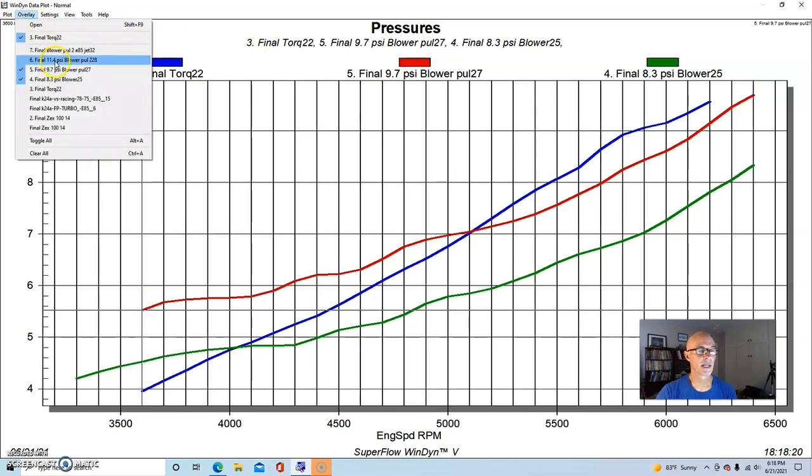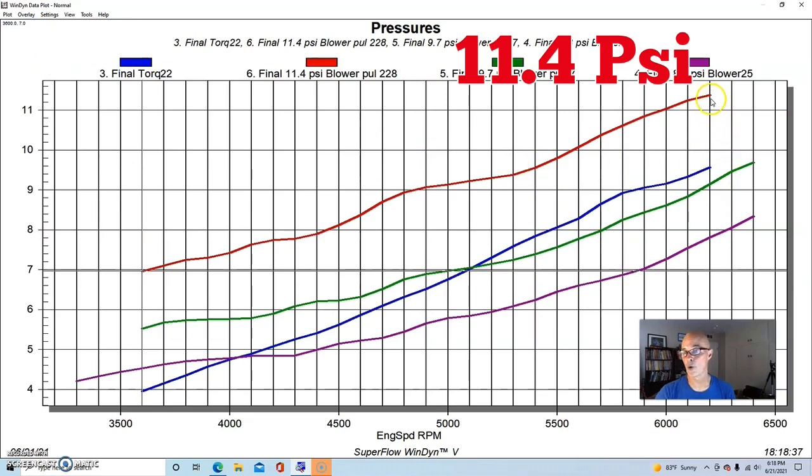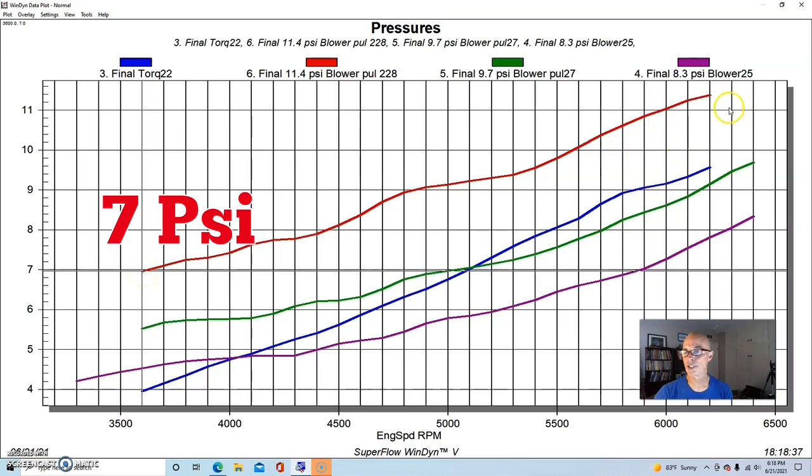It had quite a bit more boost - it had nearly 7 pounds down low at 3600 and 11.4 out at 6200, which is more than the Torque Storm at every point. But again, like I said, the 671 also had a little bit more timing. We only ran 27 or 28 degrees of peak timing with the Torque Storm, whereas we ran 30 degrees on the 671.